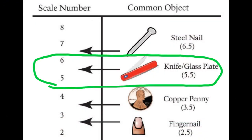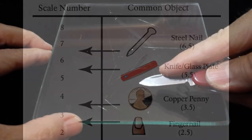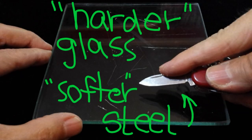As the plate glass has a Mohs hardness value of about five and a half, then we'd have to conclude this particular steel knife blade is softer than glass. Its hardness must be less than about five and a half. Interesting.